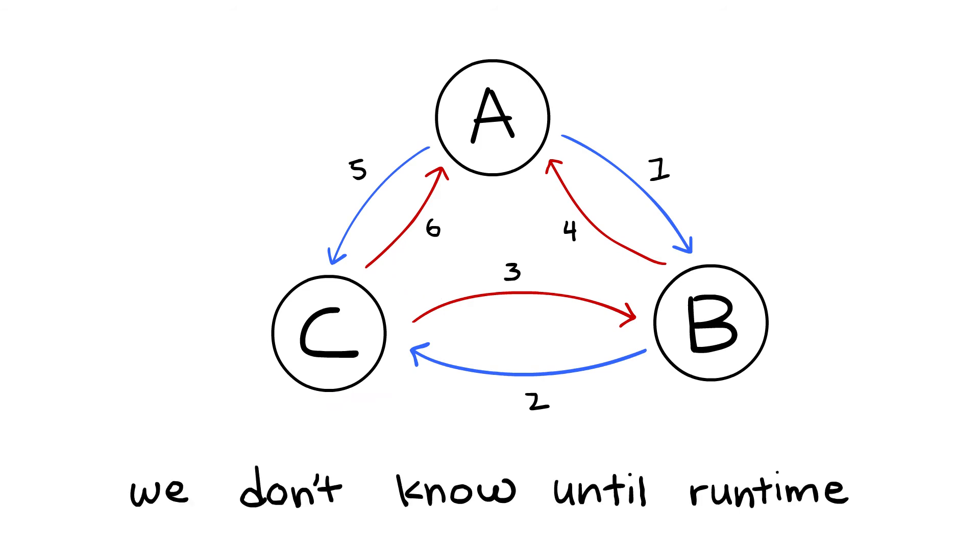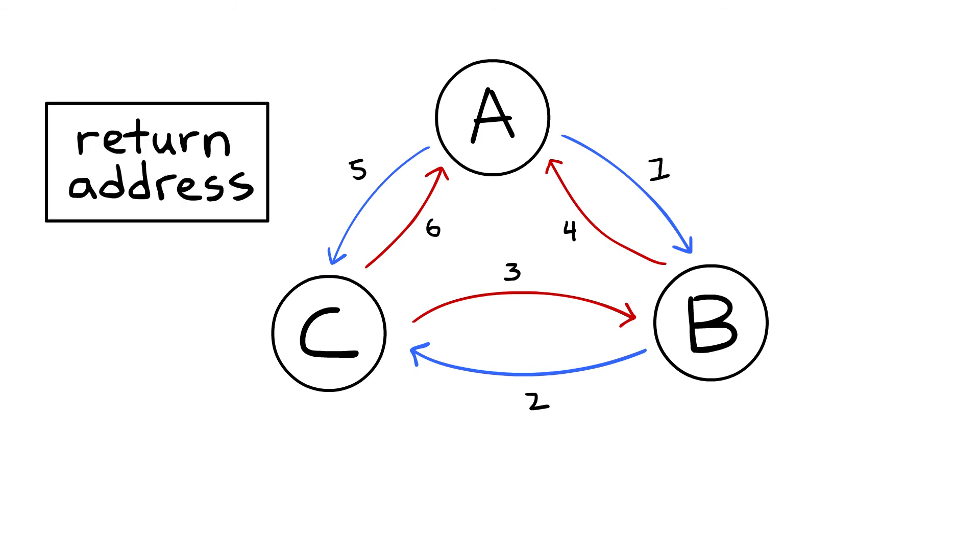The answer is that we don't know until the program actually runs. This is exactly why we need the return address to tell us whether we should go back to function B or function A.